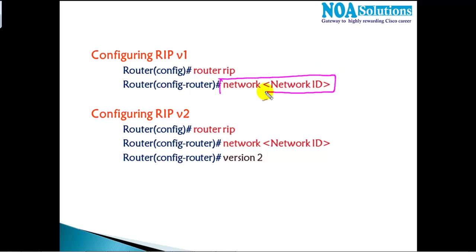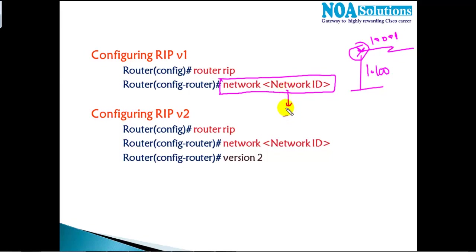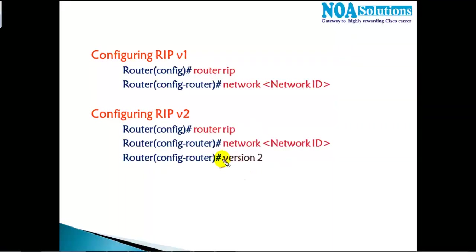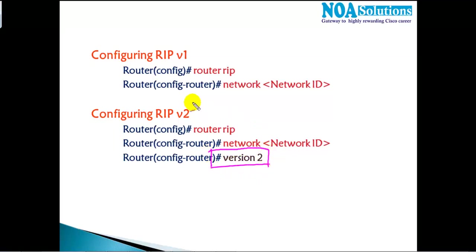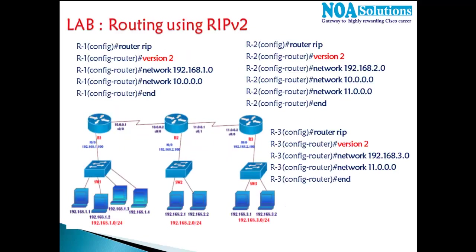Once we define the protocol, we need to advertise our own directly connected interfaces. On Router 1, I have 192.168.1.100 connected on the LAN interface and a 10.network on another interface. We just need to advertise 192.168.1.network and 10.network. If you want to use version 2, you must add the 'version 2' command; by default it runs version 1.